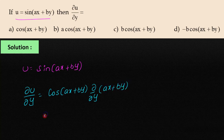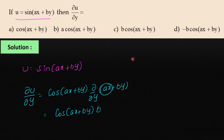This equals cos(Ax + By). Here, we partially differentiate with respect to y, so Ax is constant and its differentiation is 0. Differentiation of By is B. That equals B·cos(Ax + By).